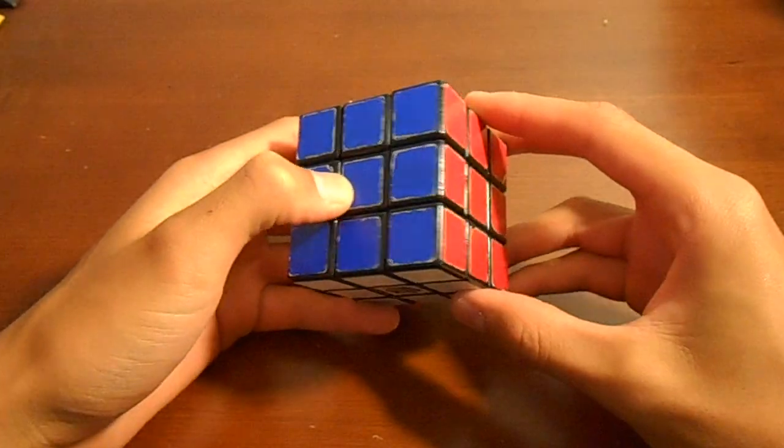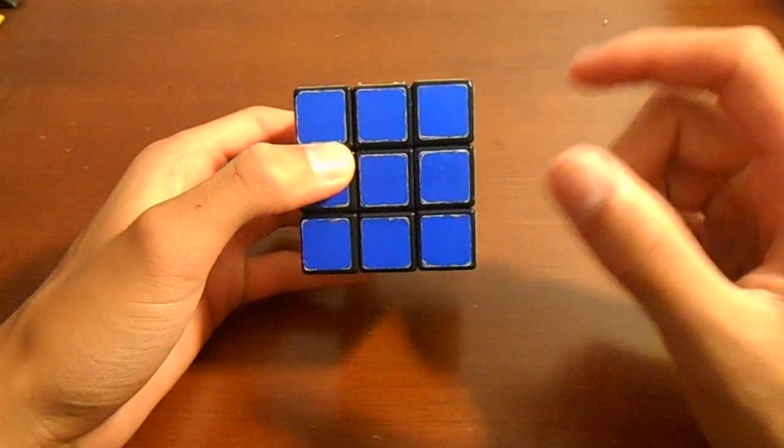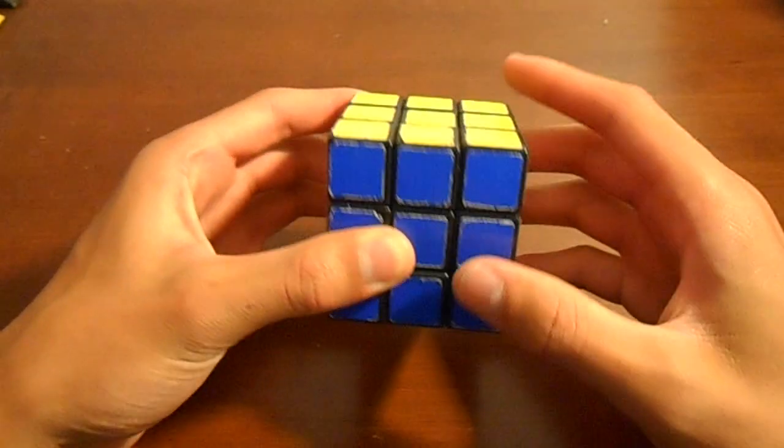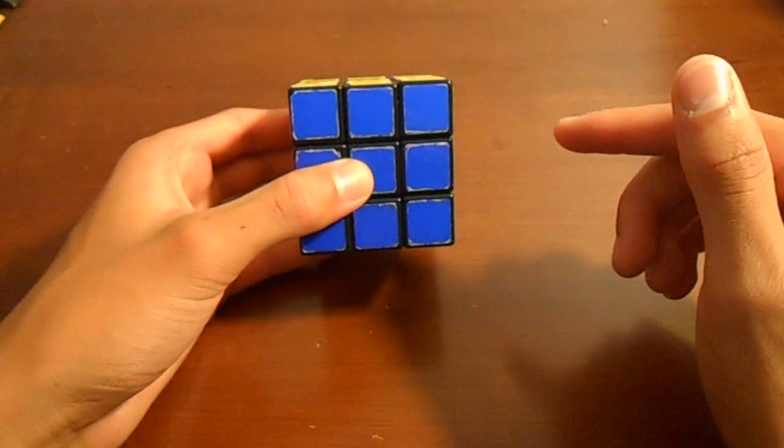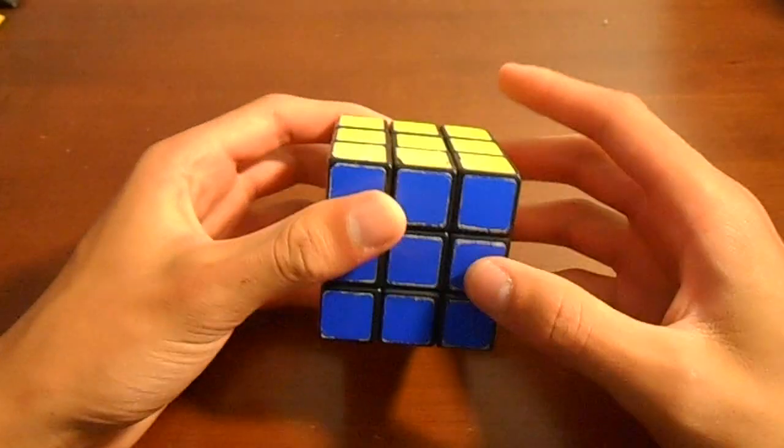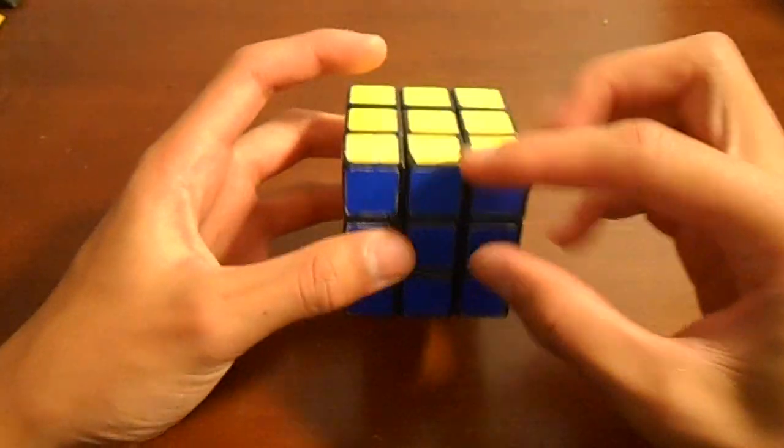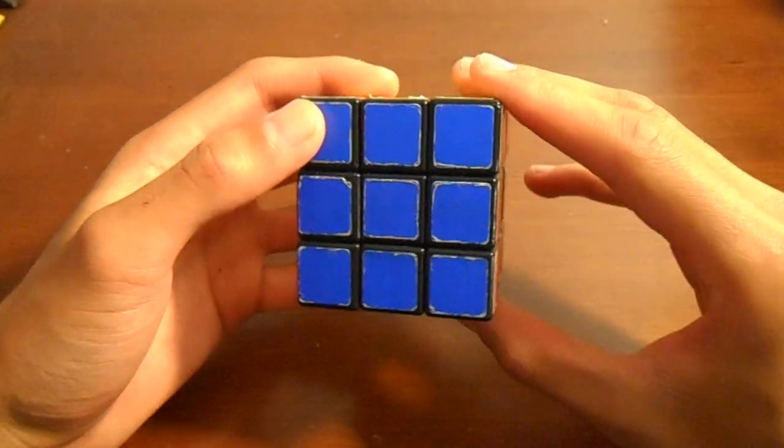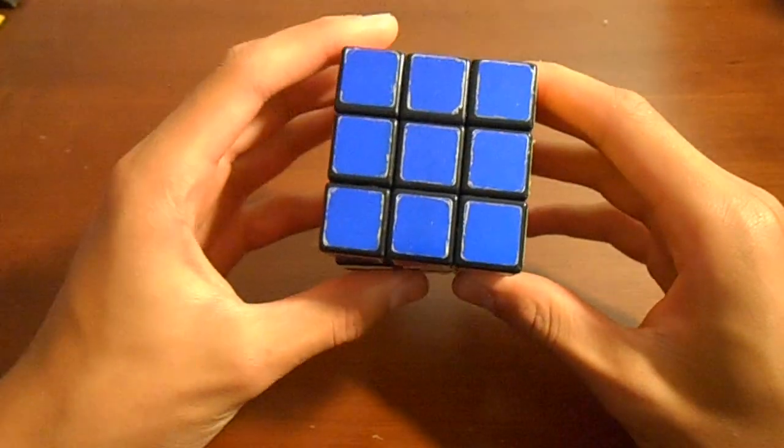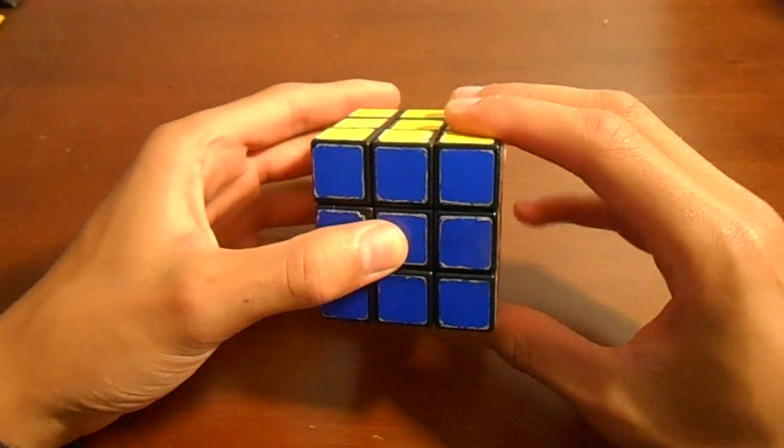How rotation is notated is basically if you're looking at that face the letter is going to be clockwise. And then the letter with a little dash next to it or like an apostrophe, it's really called a prime, would be a counterclockwise move. For example the front face F is like this, so that's clockwise. And then F prime is like this counterclockwise and that goes for all sides.